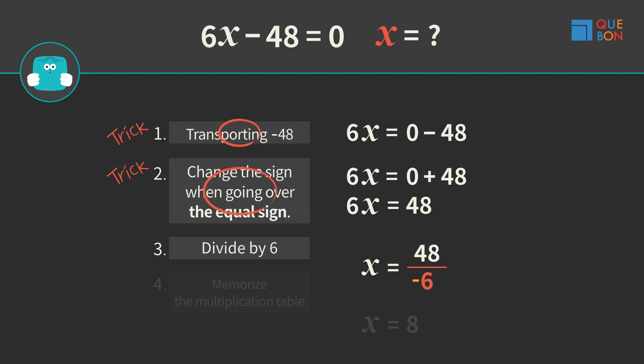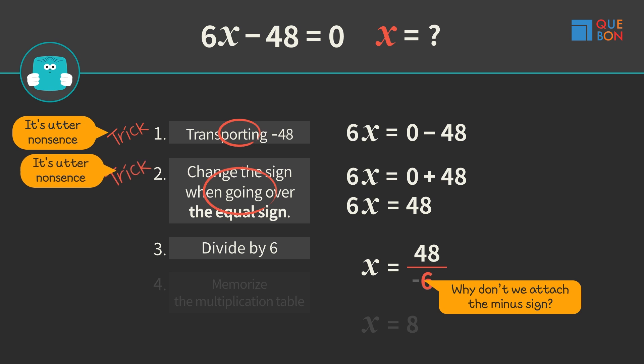Didn't they tell us to change the sign when going over the equal sign? Then, why can't we just do it here? All you know is that tricks are useful when coming to solve an equation and nothing else. It's utter nonsense.